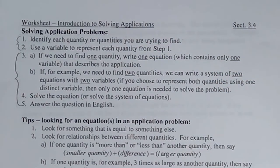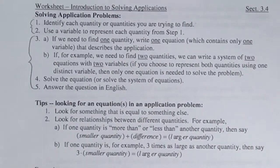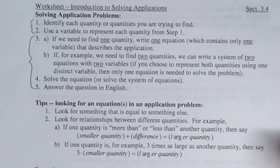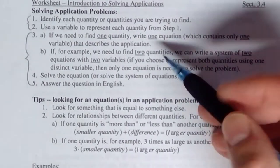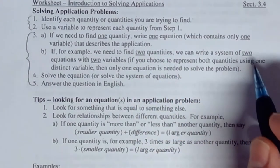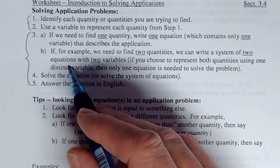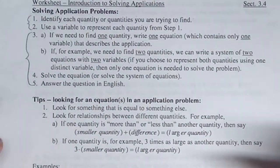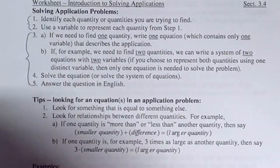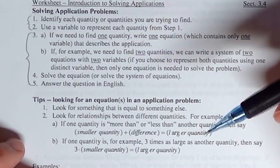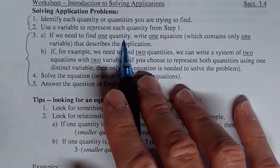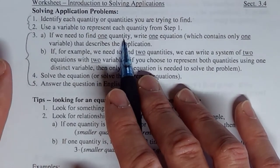We're going to be a little more deliberate about it because these problems are bigger. One other thing that's different: in a lot of these problems we're going to need two equations instead of just one. How do we know? It tells you right here — if we need to find one quantity, like 'how much baking soda,' that's one question, so we use one variable and one equation.